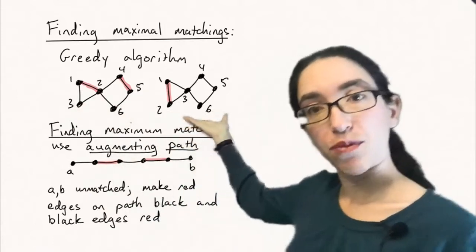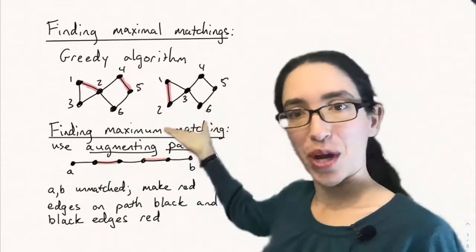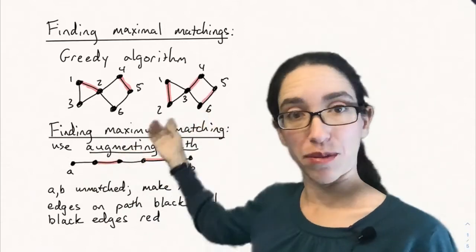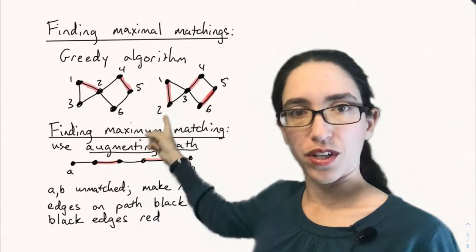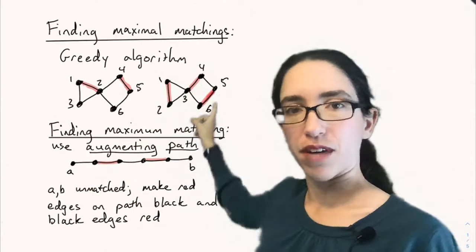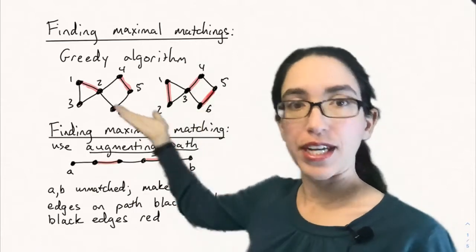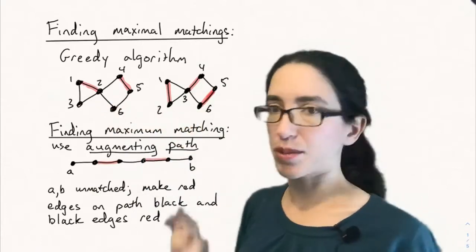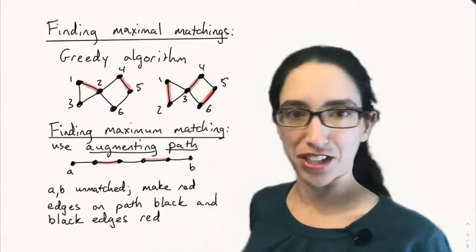But you notice if we relabeled the numbers in some way, the greedy algorithm would even give you a different maximal matching. Like if I did one, two, three in this labeling, then I'd match one and two first, and then three and four, and then five and six. And so the greedy algorithm can even lead to different results, but it always leads to some maximal matching.